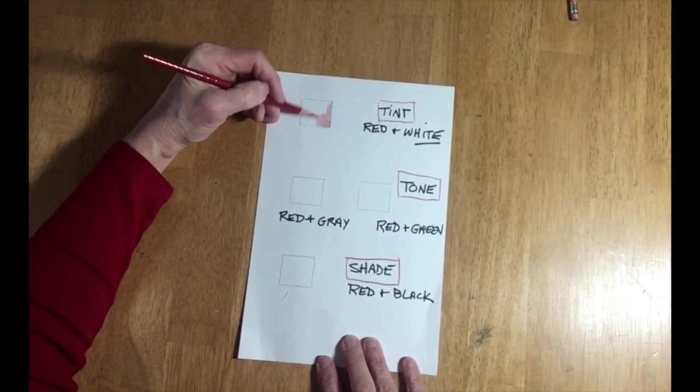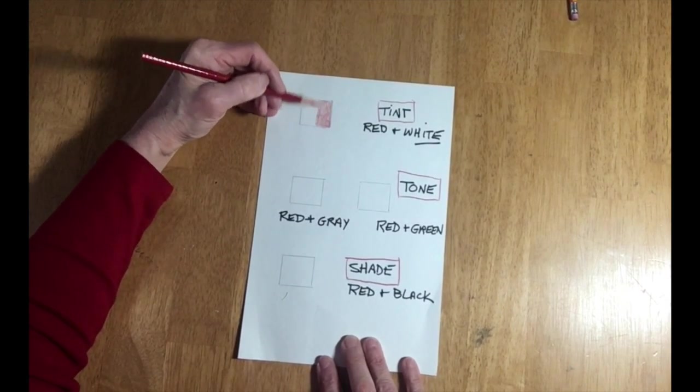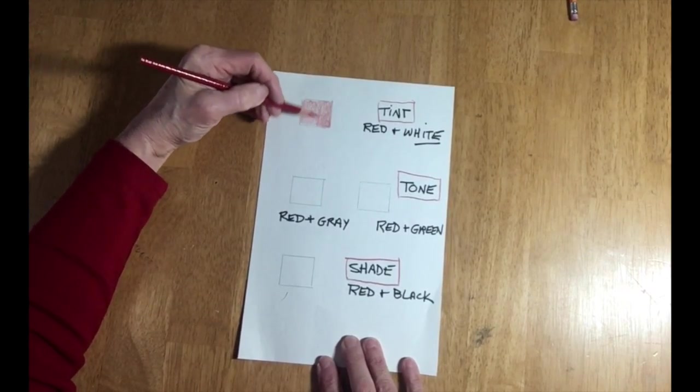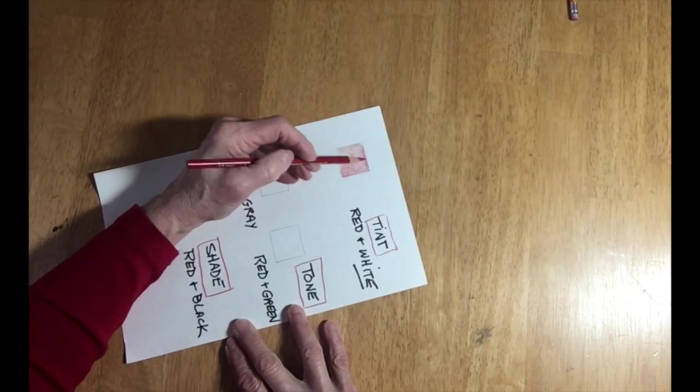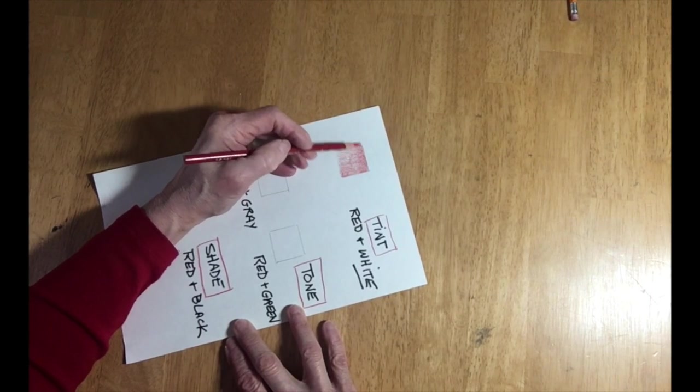A color with white added to it is called a tint. So here you see me using red and I'll be applying white on top of it to create a lighter value called a tint of the color red.